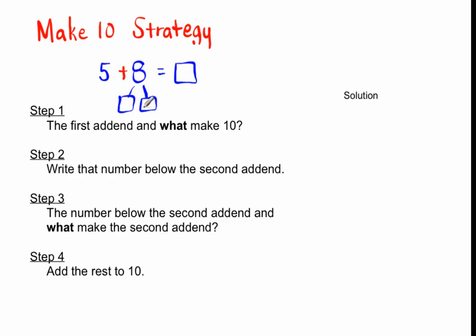Our first question is to ask the first addend: the first addend is 5, so ask 5 and what make 10? 5 and 5 make 10, so you put a 5 right here. We've already made 10, and this number here—we're going to add the rest.